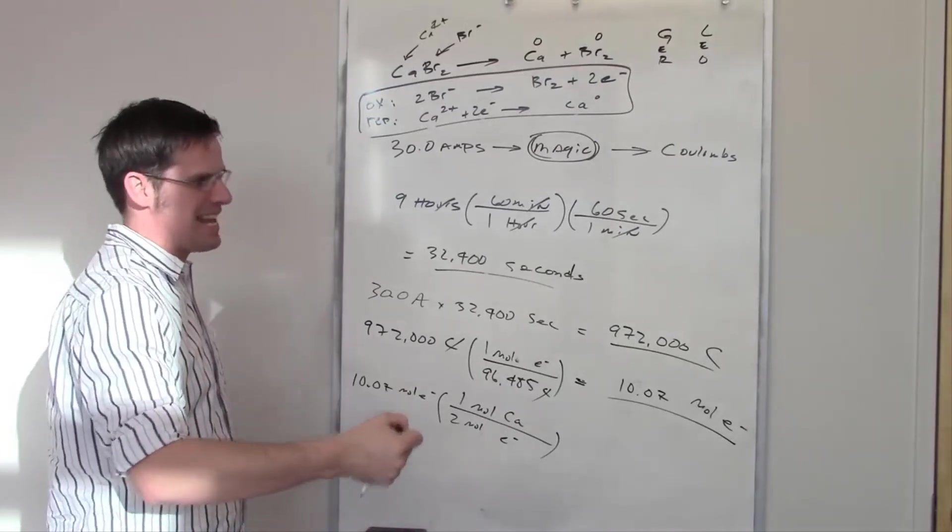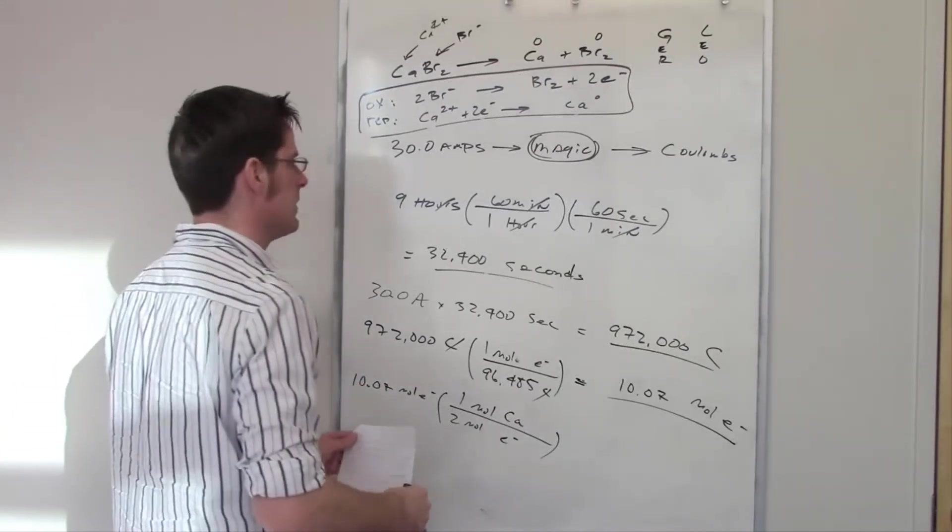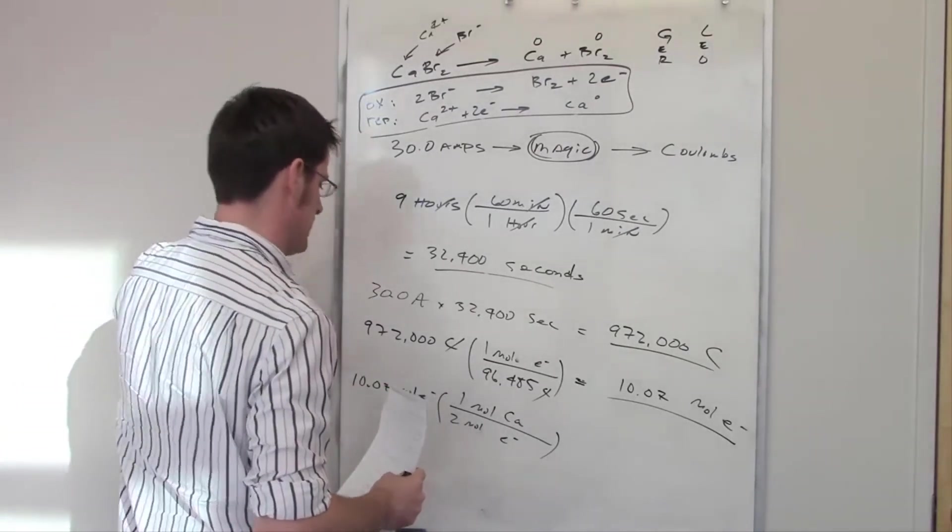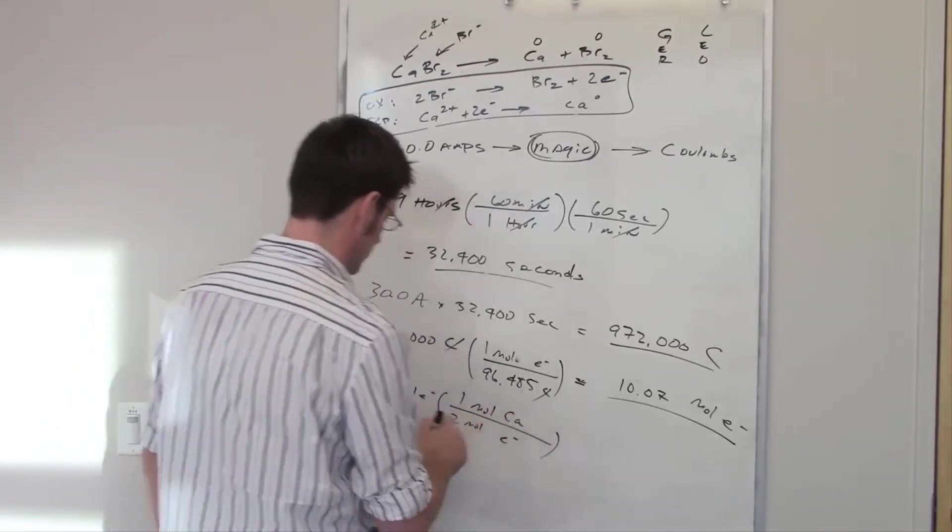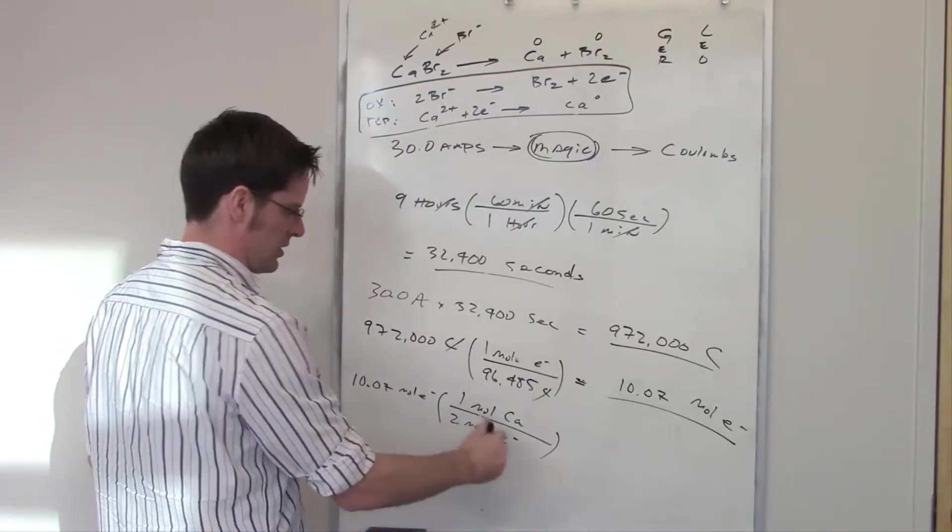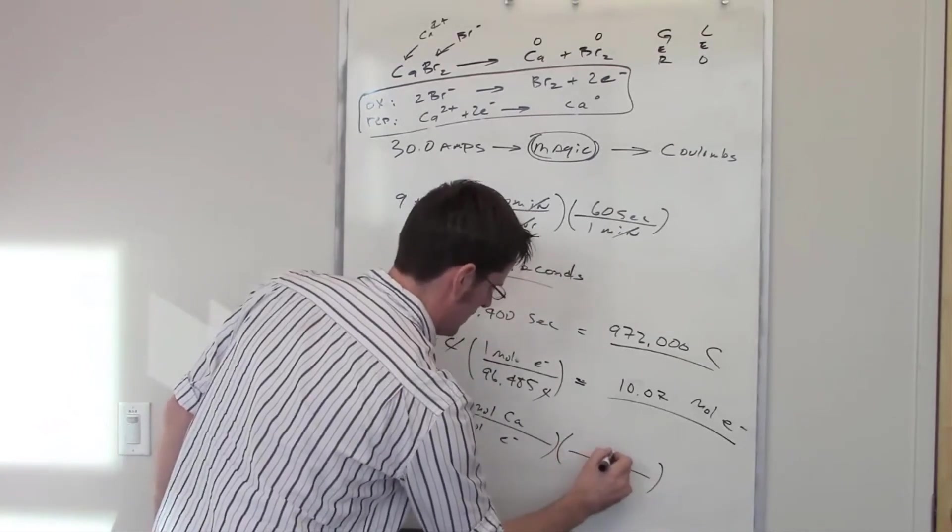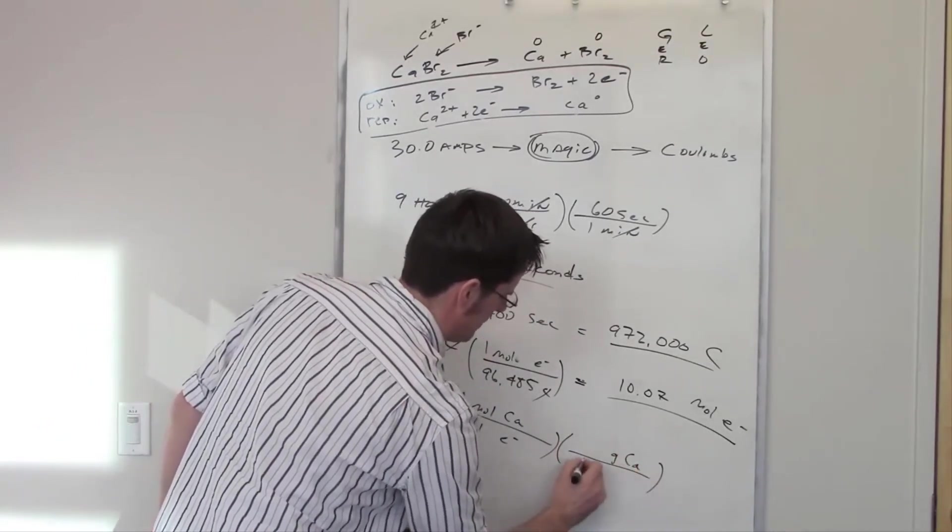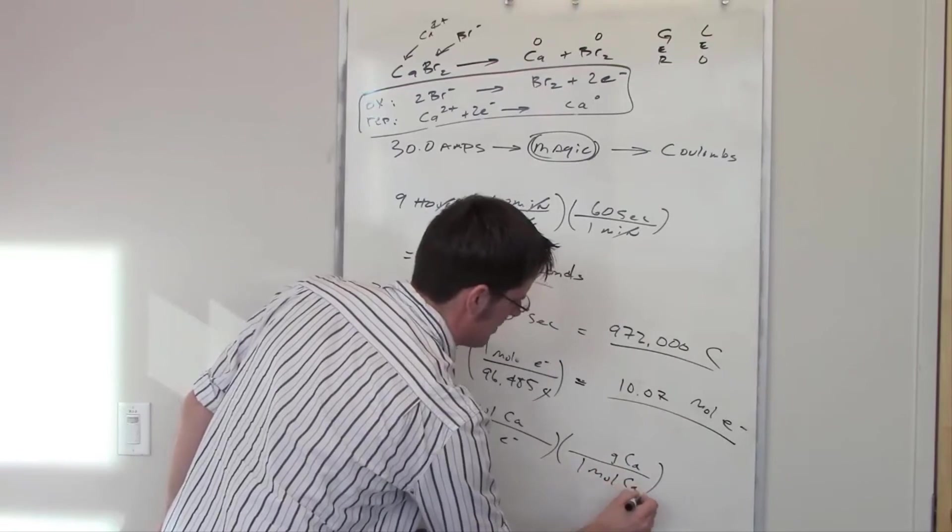And now I'll note from the stoichiometry up here that I have two moles of electrons for every one mole of calcium. I'm focusing on the calcium because the question asked me about calcium. It asked: how many grams of calcium metal are being produced in this process?